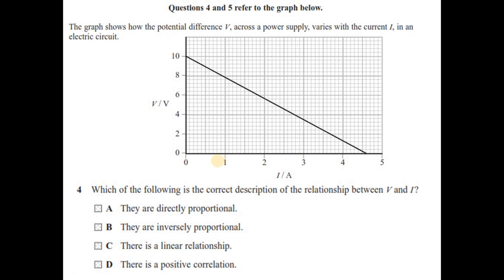Question number 4 and 5 represent the graph below. The graph shows how the potential difference V across a power supply varies with the current I in an electric circuit. Which of the following is the correct description of the relationship between V and I? They are not directly proportional, even though we have a straight line. For directly proportional, we have a line going up through the origin. Inversely proportional, no. We have inversely proportional graph as a curve. Option is C. The linear relationship means we have a linear line, and it can be moving up or coming down. So option is C.